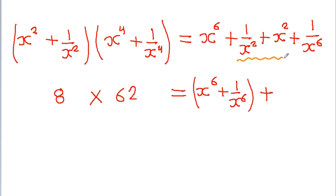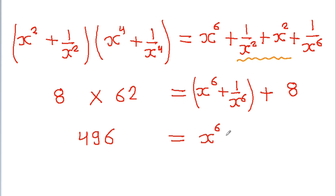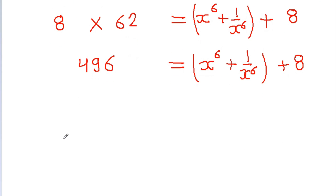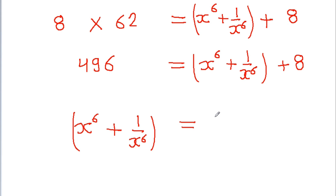Since x² + 1/x² is 8, we get 8 times 62 equals 496, which equals x to the power 6 plus 1 by x to the power 6 plus 8. Therefore the value of x to the power 6 plus 1 by x to the power 6 is 496 minus 8, which equals 488.